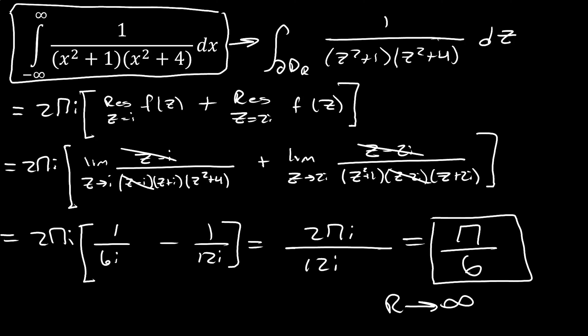Look at how simple this method is. We could do partial fraction decomposition if we really wanted to, but this is just about 5 lines of math, whereas partial fraction decomposition would have been a lot more work. And we got a pretty simple and straightforward solution: π/6.